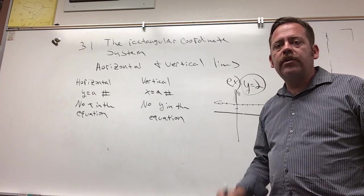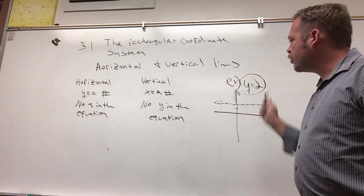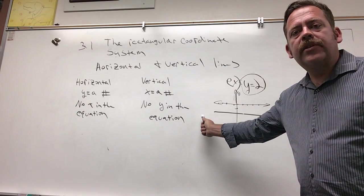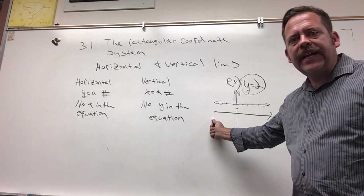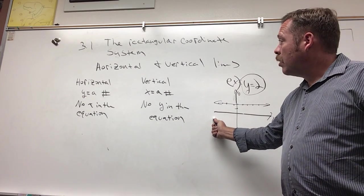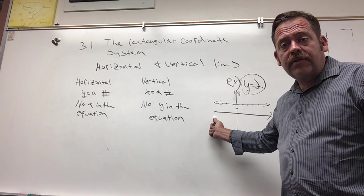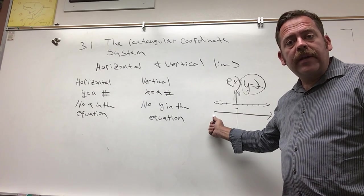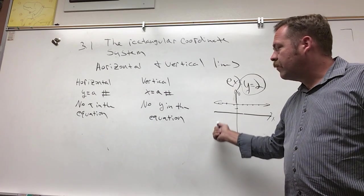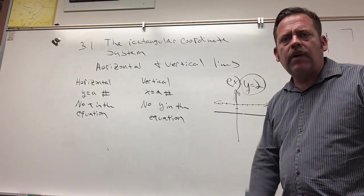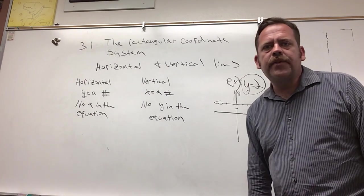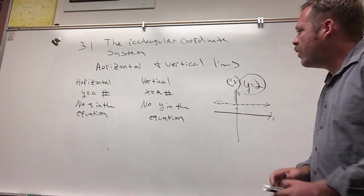So in other words, if y equals 2, this is the best visual representation on a rectangular coordinate system of y being equal to 2. If someone said draw y equal to 2, this is the only way you could draw y equal to 2. I mean it's pretty neat, right? Now similarly...